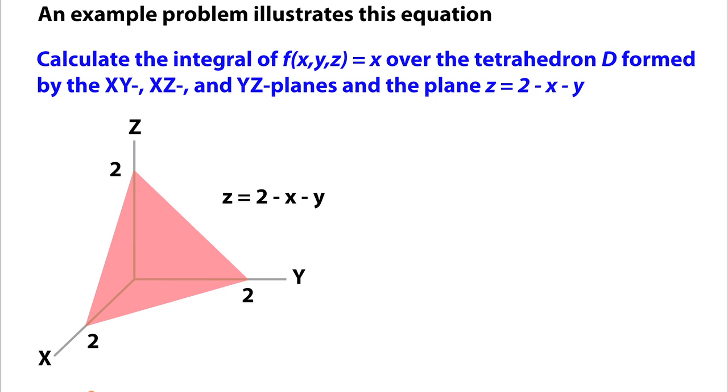So let's look at this example. Calculate the integral of f(x, y, z) equals x over the tetrahedron d formed by the intersections here of the xy plane, the xz plane, and the yz plane, and the plane z equals 2 minus x minus y.